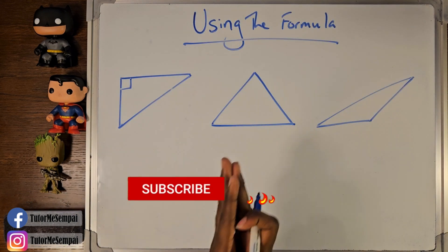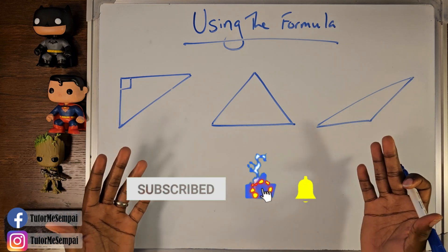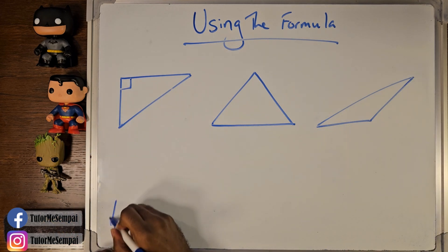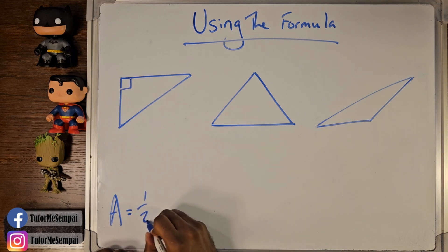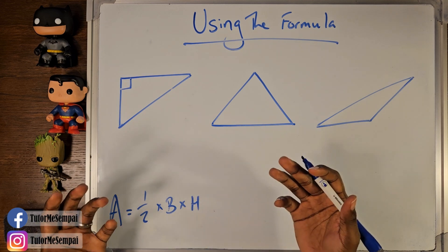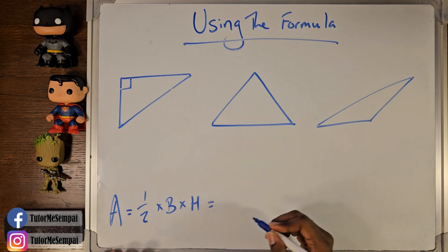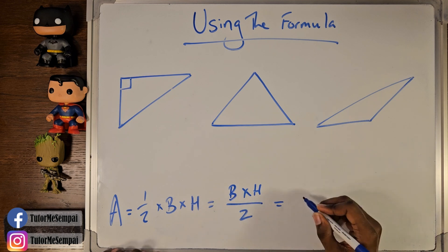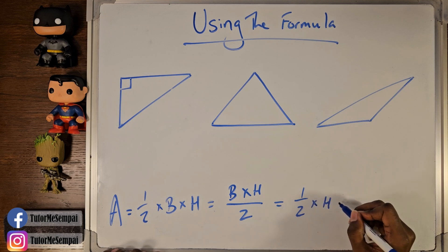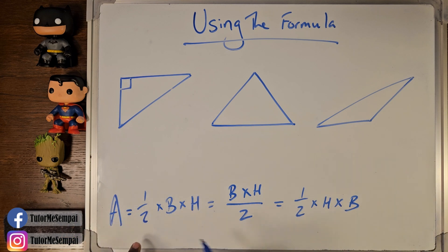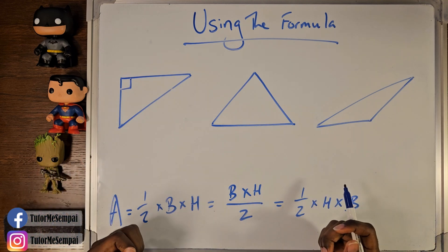Today we're going to be jumping into how to find the area of a triangle. And just like we did for finding the area of a square and a rectangle, we have a formula to help us. That formula for your triangle is going to be: area equals one-half times your base times your height. You can write this a few different ways — base times height all over two, or one-half times height times base. It really doesn't matter how you write it. As long as you have a half, a base, and a height, and you're multiplying it all together, you have your area formula for your triangle.